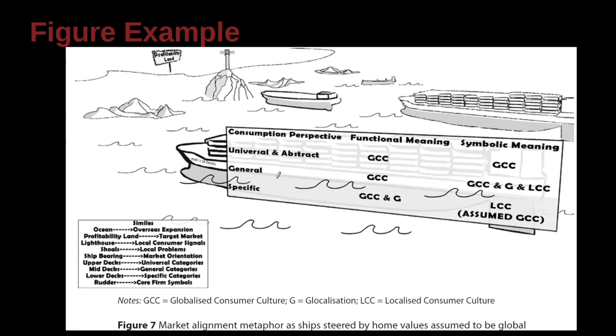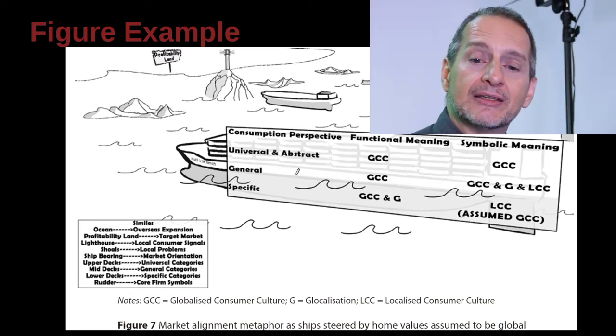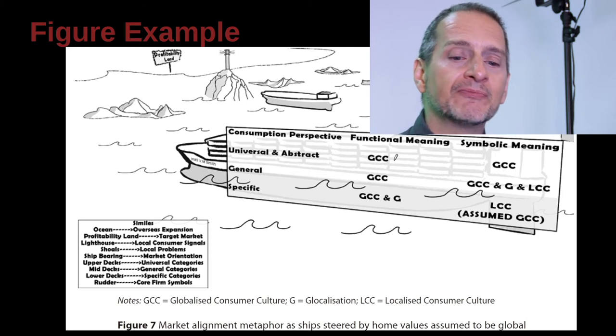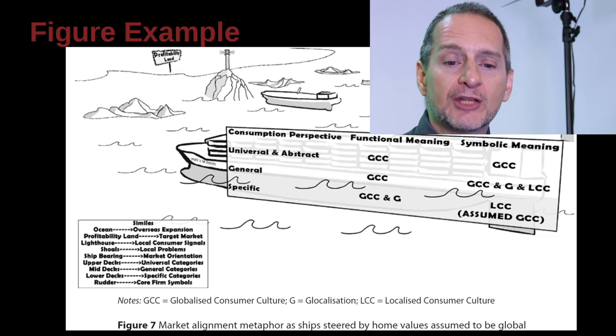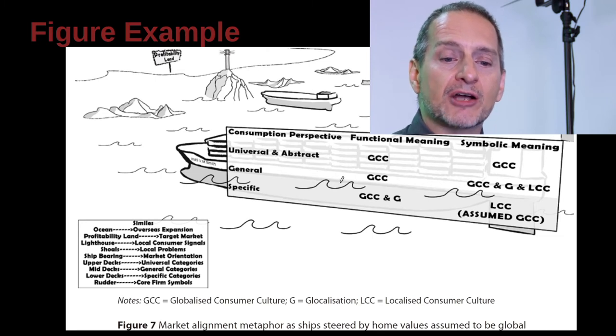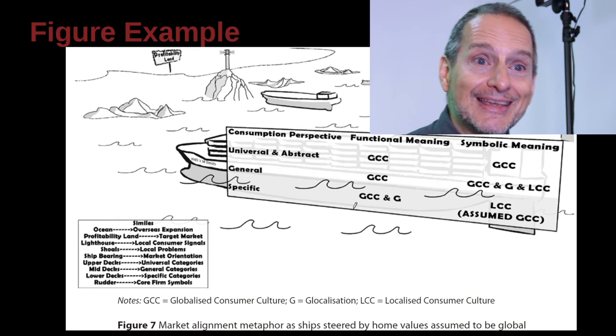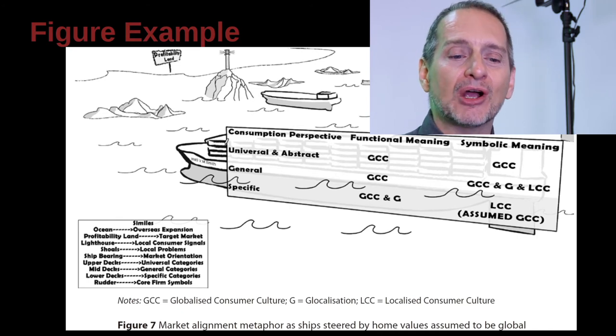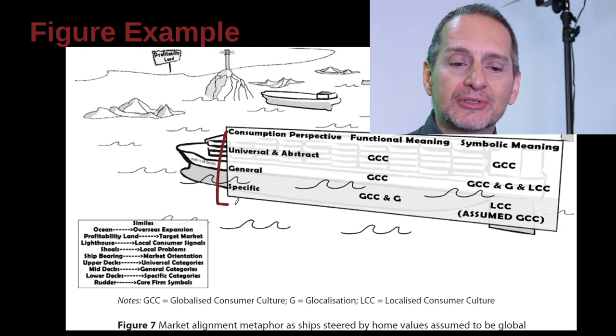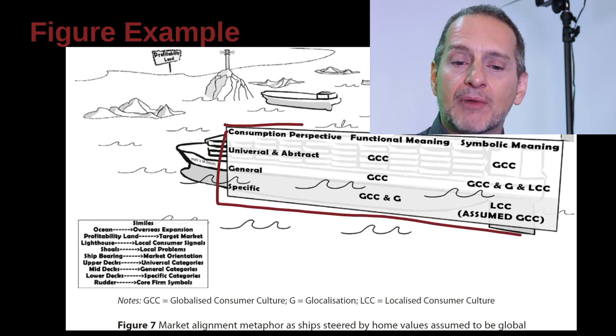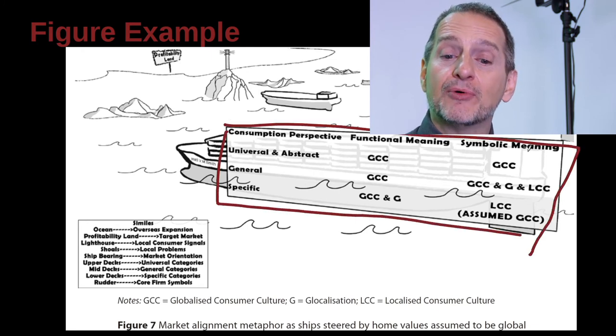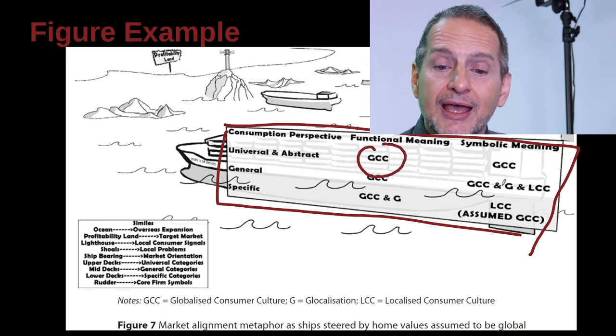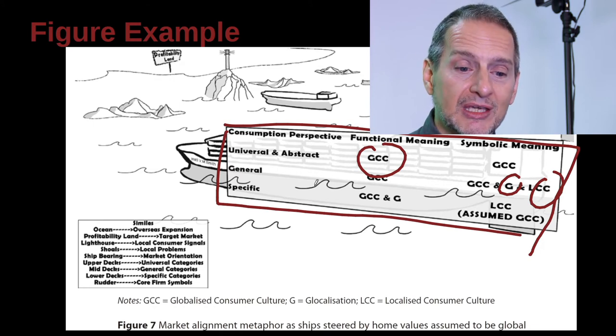What we're doing is we're trying to show an idea, and the idea is about international trade, and about international marketing, and culture in different countries. We're trying to represent our conclusion by saying the finding is like this. It's like a boat on the ocean heading towards the target market. Here is a little table that's inside my figure, and this table has some abbreviations like GCC, and G, and LCC, and what do these mean?